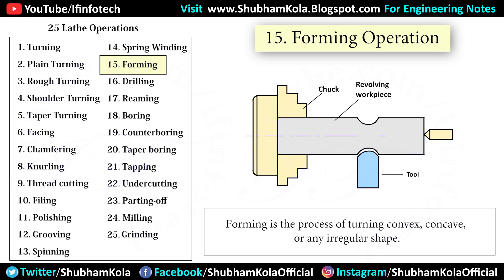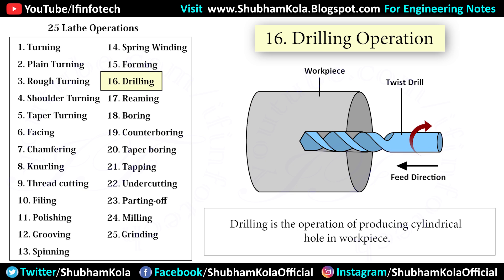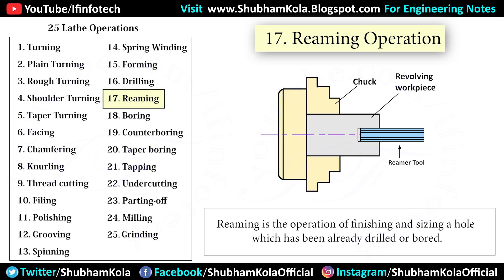The straight type is used for wider applications and the circular type for narrow surfaces. In lathe machine drilling, the operation produces a cylindrical hole in a workpiece using a rotating cutting tool known as a drill. The workpiece revolves in a chuck or faceplate, and the drill is held in a tailstock drill holder or drill chuck, with feeding done by movement of the tailstock spindle. Reaming is the operation of finishing and sizing a hole which has already been drilled. The tool used is a reamer, which has multiple cutting edges, and is held on the tailstock spindle while the work revolves at slow speed.